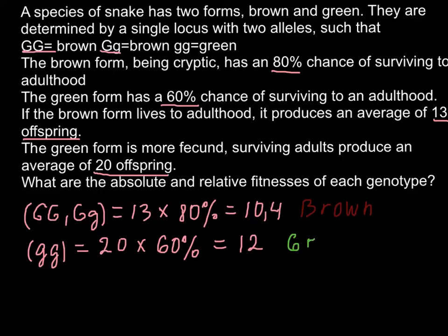So as you see, the second number, that is 12, is greater than the first one, so the green phenotype would be more fit than the brown phenotype.